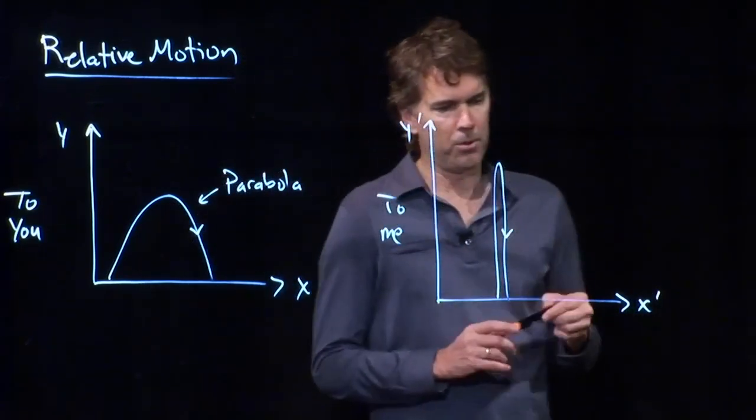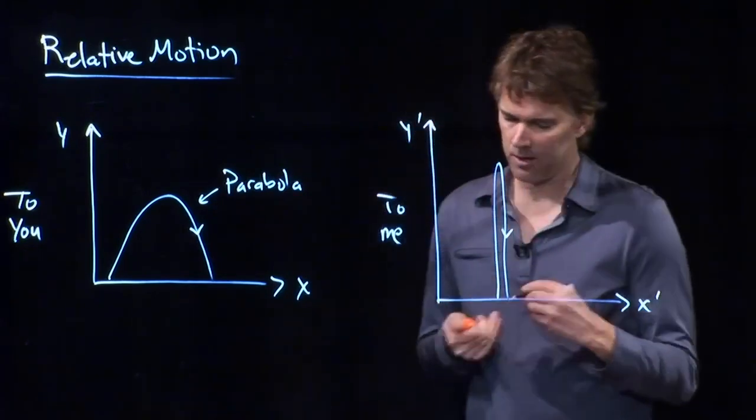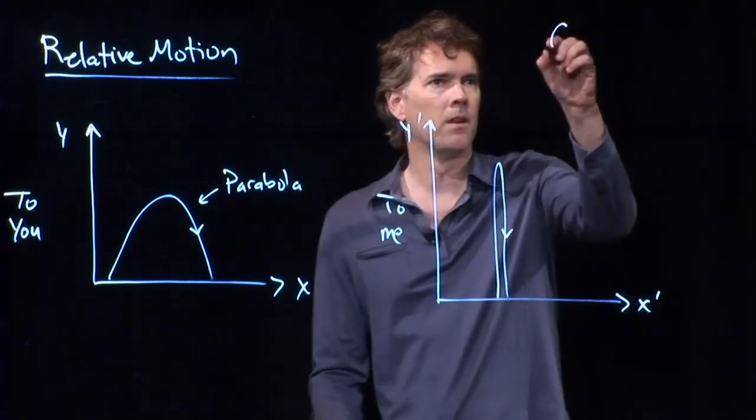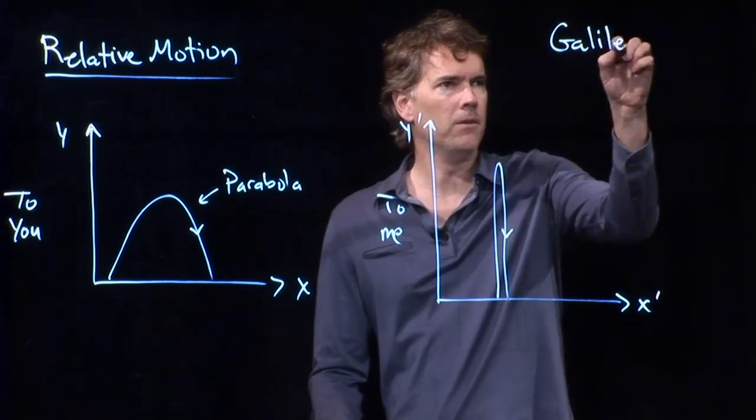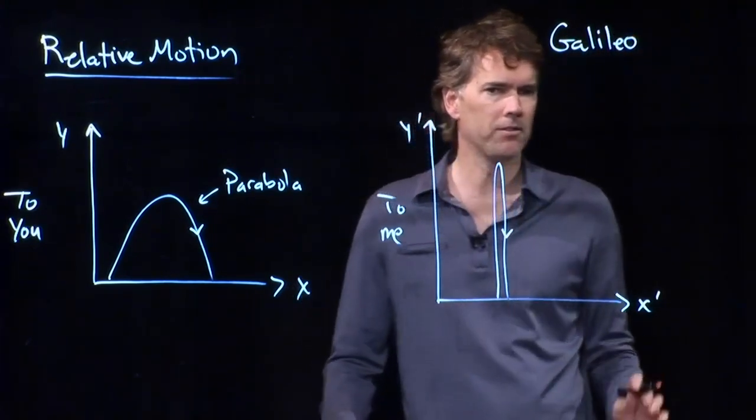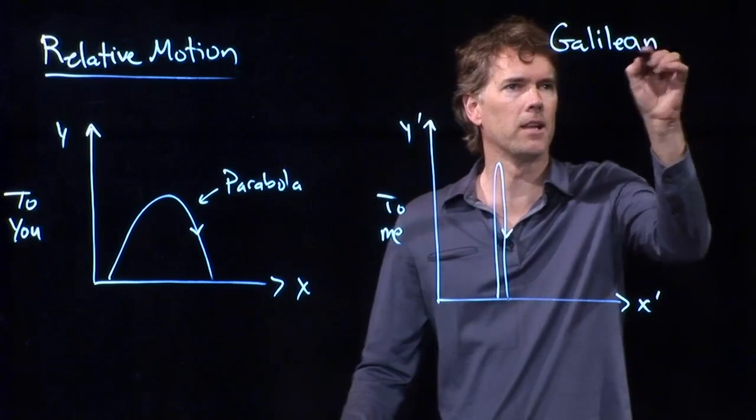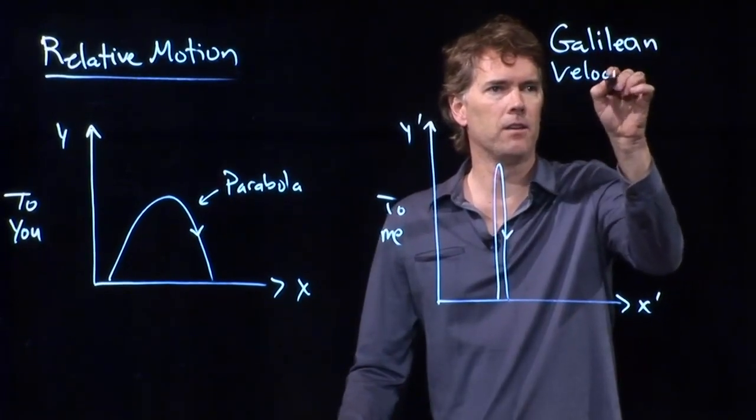And the person that came up with the idea originally was Galileo. And he wrote down something called the Galilean velocity transformation.